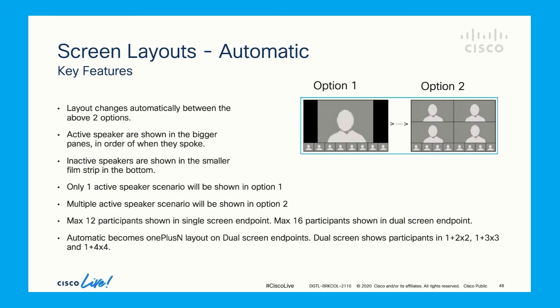This is the automatic layout. This layout changes between two options depending on how many active speakers there are. If there is only one active speaker, option one is chosen, and when more than one speaker is active, option two is chosen. This layout becomes one plus N layout when the endpoints are dual screen endpoints. Maximum 12 participants are shown in a single display endpoint and 16 for dual display endpoint.